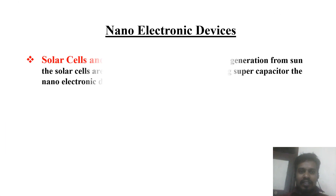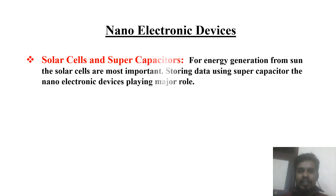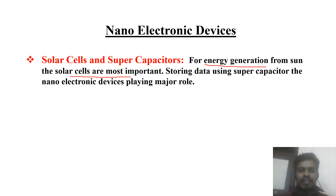These devices are called solar cells and supercapacitors. We have seen many applications of solar cells — they are used for energy generation from the sun. Solar cells are most important in satellites as well as in our calculators. They absorb solar photons and convert them into electrical energy.